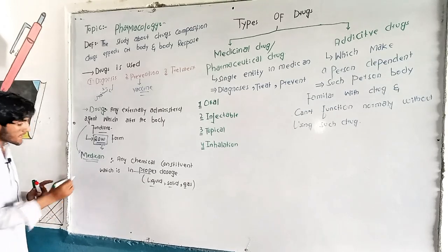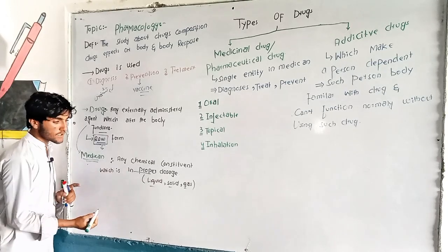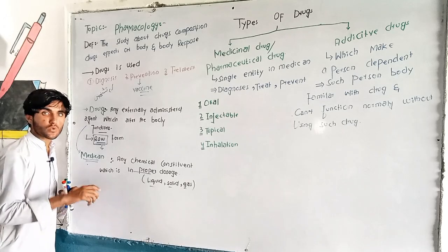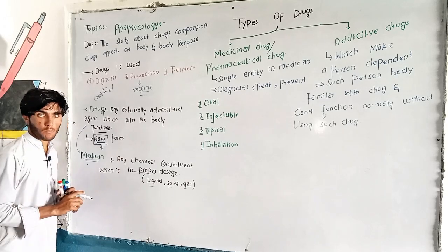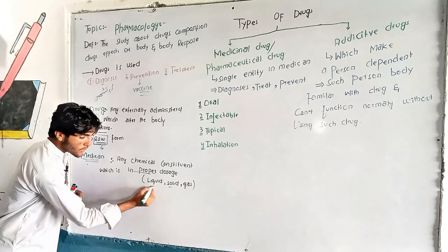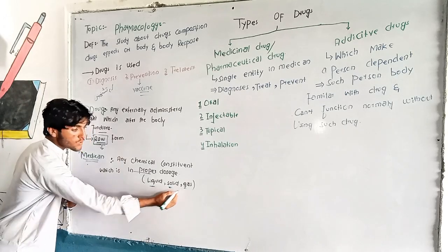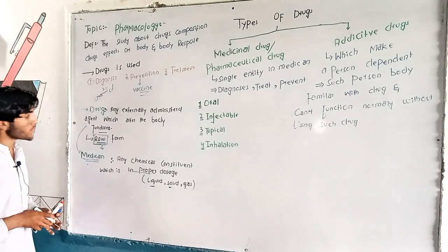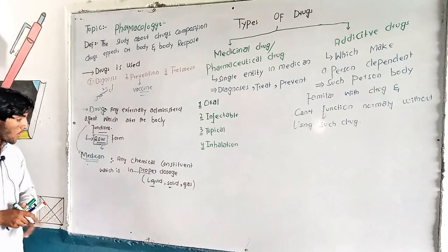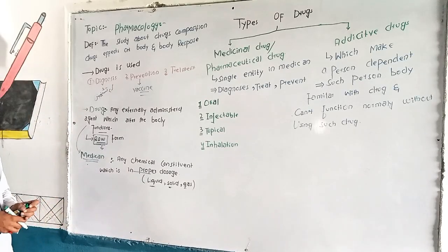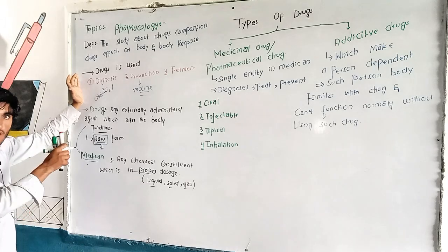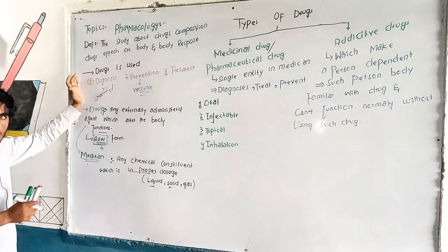Medicine is a chemical constituent which is used for a specific disease. If we take drugs and they are formulated or modified for treating a particular condition, such as diabetes, that becomes medicine.